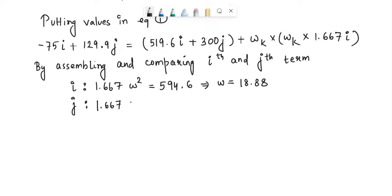Similarly, 1.667·alpha = -170.1, which implies alpha = -102.0. So W = -18.89k rad/s and alpha = -102k rad/s².